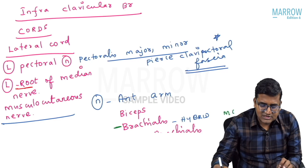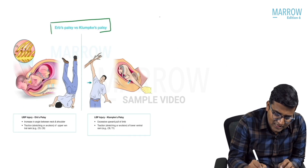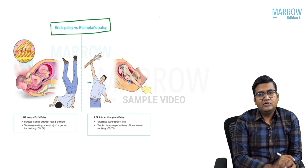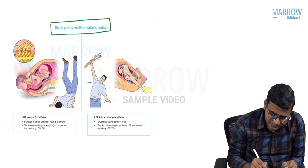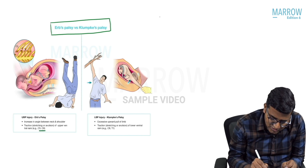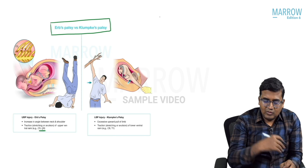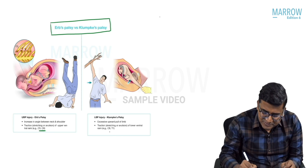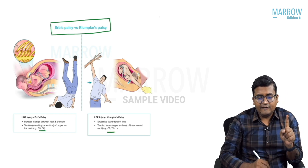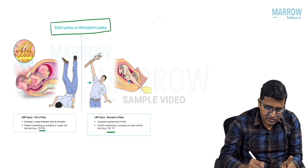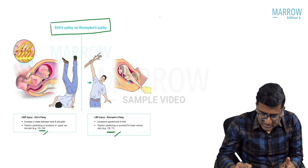Now for the applied section, we have Erb's palsy and Klumpke's palsy. Erb's palsy is an upper trunk injury involving roots C5 and C6. Klumpke's palsy is a lower trunk injury involving C8 and T1.